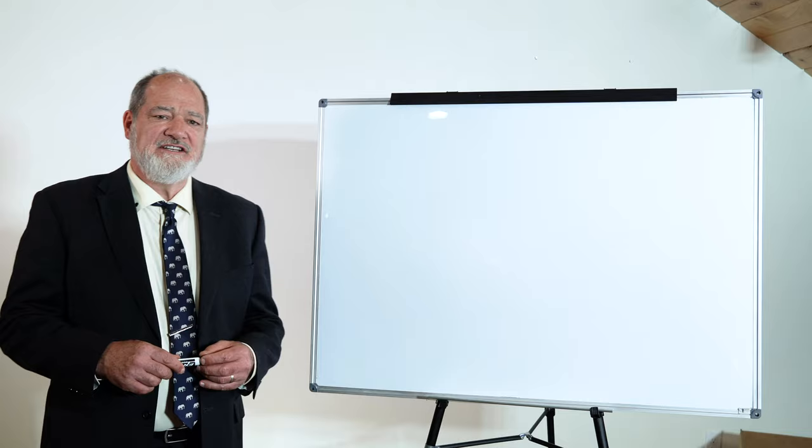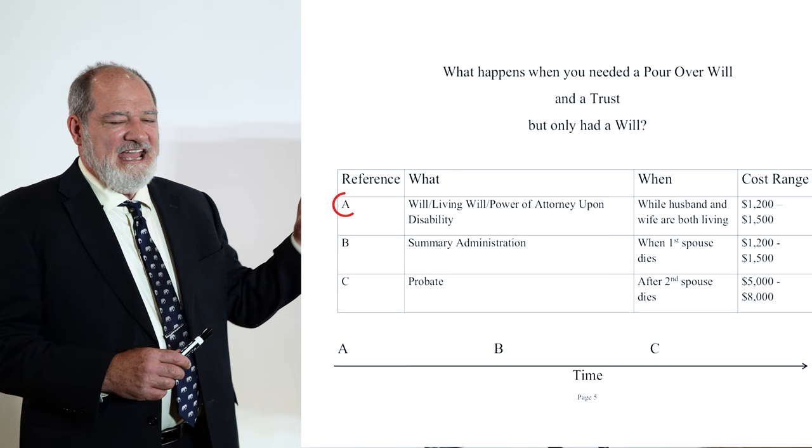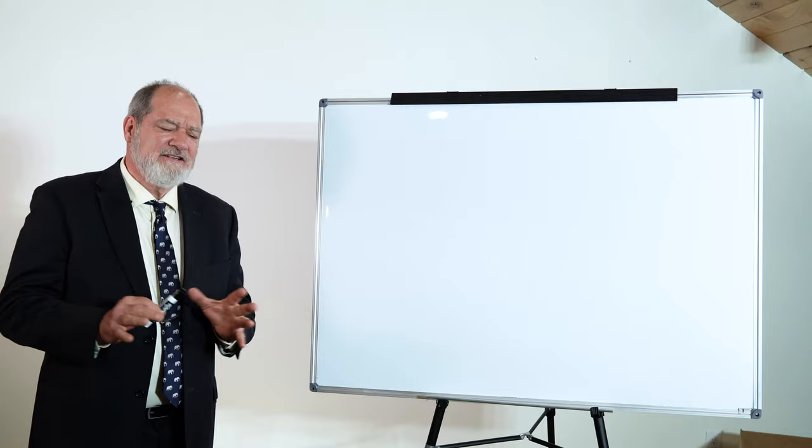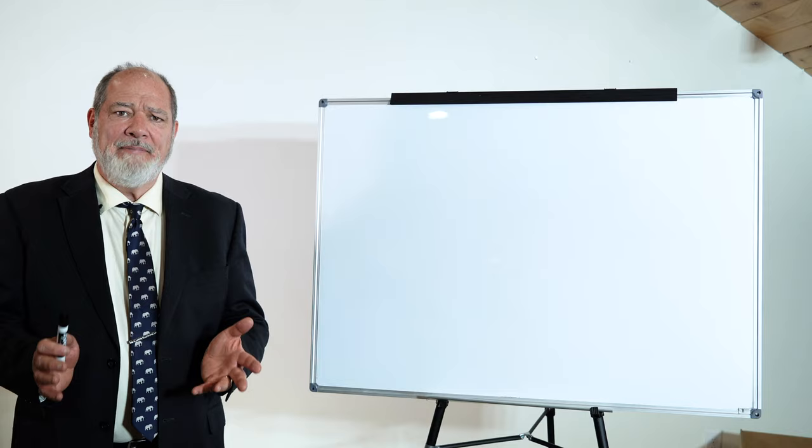If you refer to that chart we've been using, you'll see A, B, and C, and C is probate when the second spouse passes away. If you get two words from this entire series, it's this: probate bad.